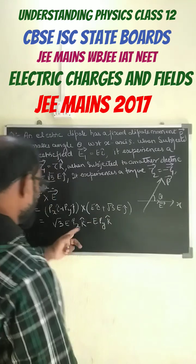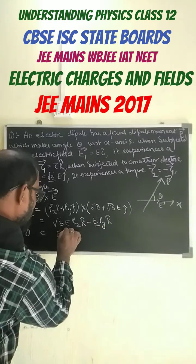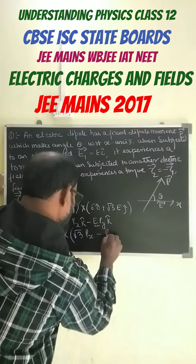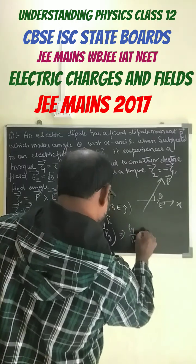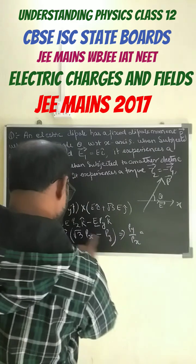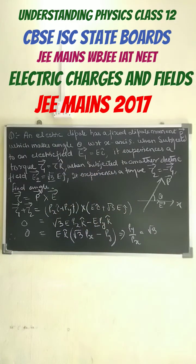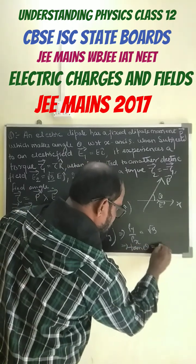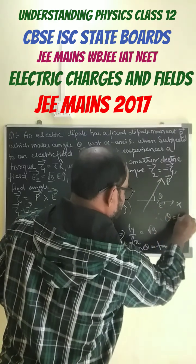So we get zero, and on multiplying we take E k-cap as common, giving us root 3 Px minus Py equals zero. From this equation we get Px equals root 3 Py. This is nothing but tan(theta), which gives tan(theta) equals root 3, therefore theta equals 60 degrees is our answer.